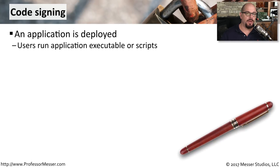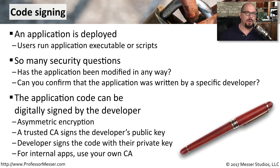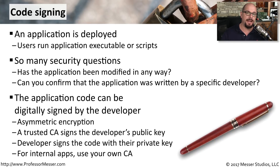In many application rollouts, we deploy a new application and users execute it on their desktop. This brings up security questions: has the application been modified since it was deployed, and can we confirm it was really written by the expected developer? We can answer both questions using code signing. Code signing takes advantage of asymmetric encryption to digitally sign the executable, so when it runs on the desktop, the end user can see that nothing has changed and knows exactly who the publisher was.